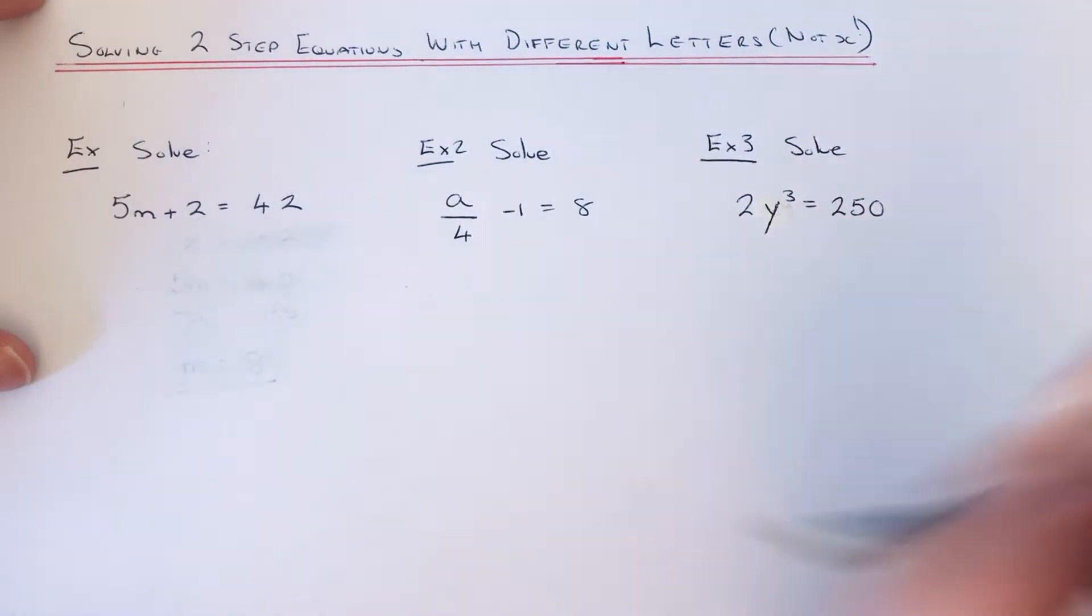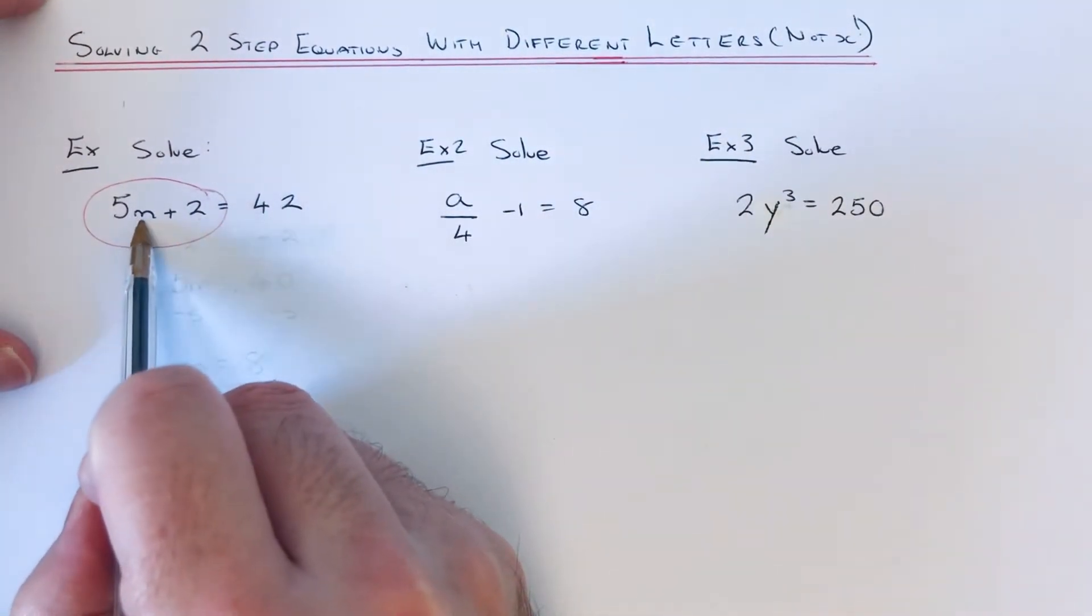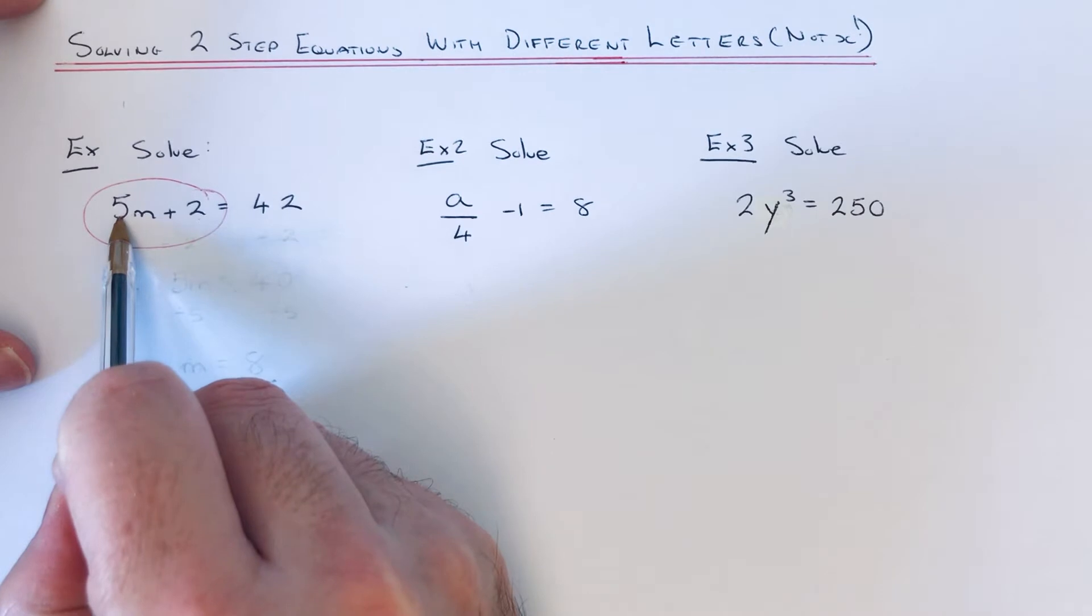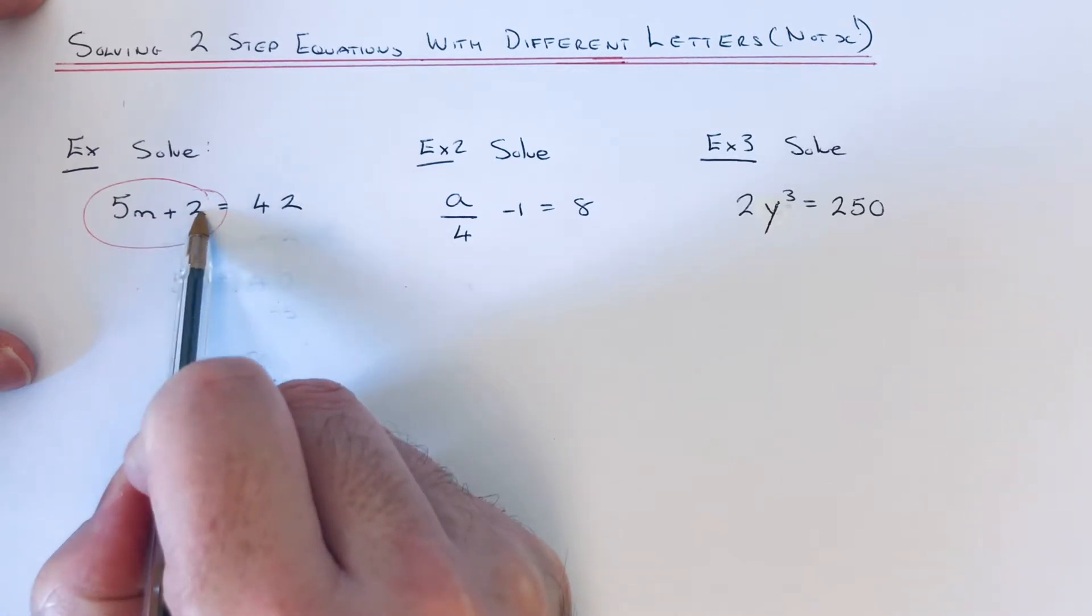Okay, so if we look on the left-hand side of our equation, look what's happening to m. First of all, it's been multiplied by 5 as 5 is right next to the letter m, which means it's multiplying. And then we're adding on 2.